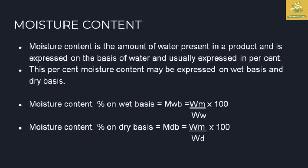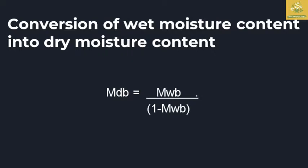For calculating moisture content on a wet weight basis: M(WB) = weight of moisture divided by total weight with water, multiplied by 100. Moisture content on a dry basis: M(DB) = total weight of matter divided by weight of dry matter, multiplied by 100. The conversion from wet basis to dry basis uses the formula: M(DB) = M(WB) divided by (1 minus M(WB)).